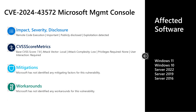The next vulnerability is CVE-2024-43572, an important remote code execution vulnerability in the Microsoft Management Console. This one was publicly disclosed and exploitation has been detected at the time of release. It has a CVSS base score of 7.8. The attack vector is local, attack complexity is low, privileges required is none, and user interaction is required. There are no documented mitigations or workarounds. The affected software is all versions of Windows in mainstream support — Windows 10 and 11 on the desktop side, and Server 2016, 2019, and Server 2022 on the server side.